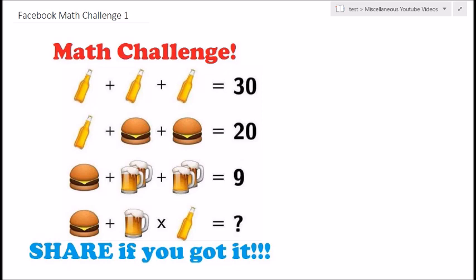We've got three different variables: the bottled beers, the burgers, and the draft beers. We've got three bottles of beer and those three added up equal 30. Since they all have to be the same value, we can pretty easily conclude that each bottle must be 10, because 3 times 10 is 30. So the bottle is equivalent to 10.